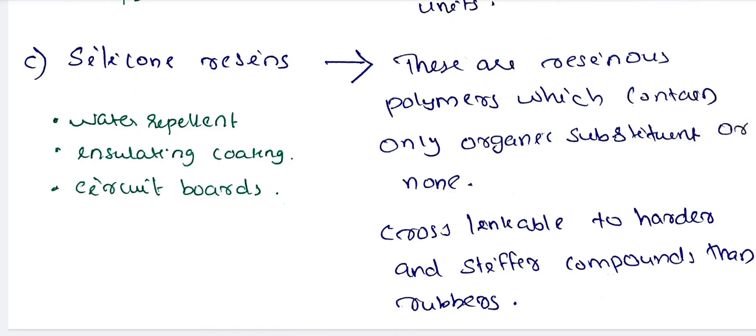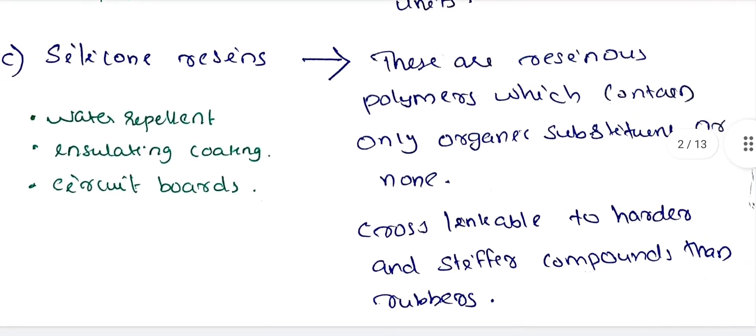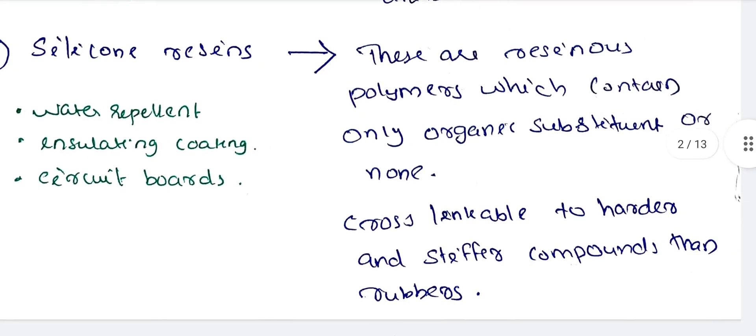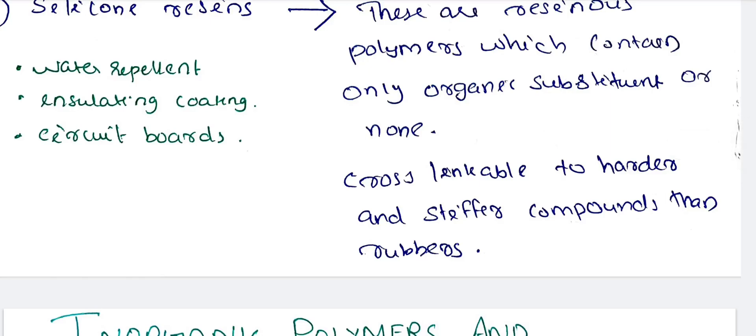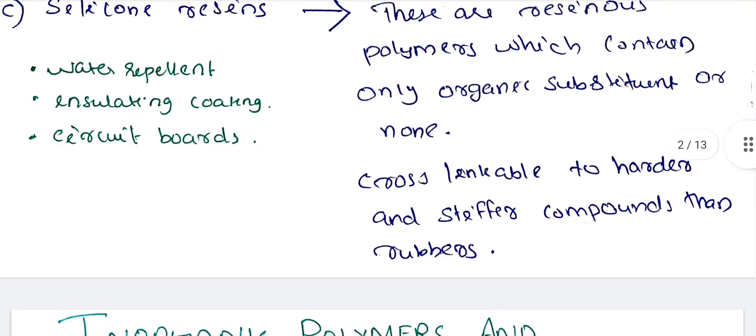Silicon resins are used as water-repellent insulation coatings and for circuit board applications. They are resin polymers which contain only organic substituents or none, and are cross-linkable to harder and stiffer compounds than rubbers.